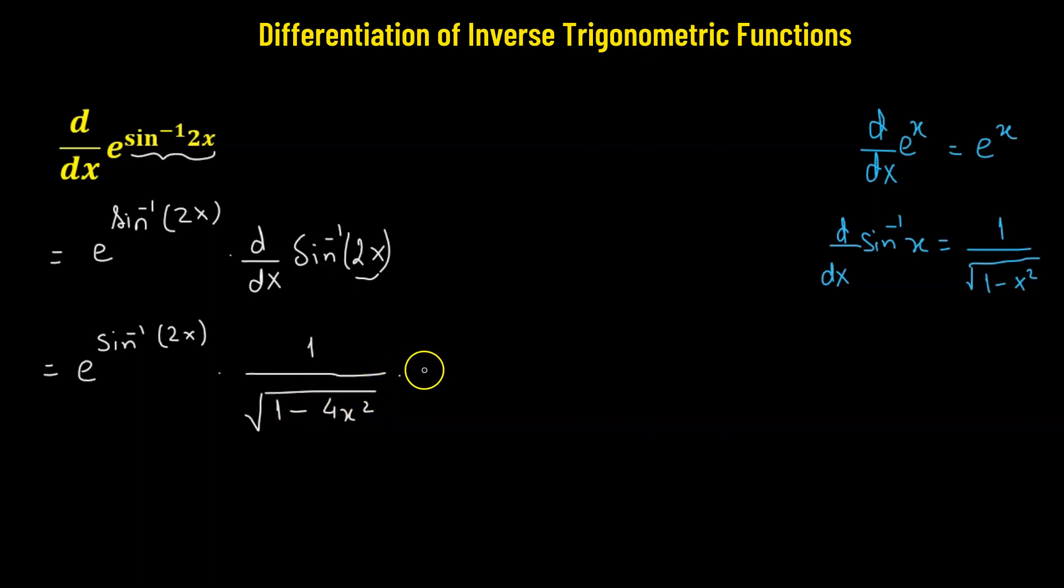This will be multiplied to the derivative of 2x. We have again applied the chain rule. So 2 is a constant we can pull out, and the derivative of 2x will be simply 2.